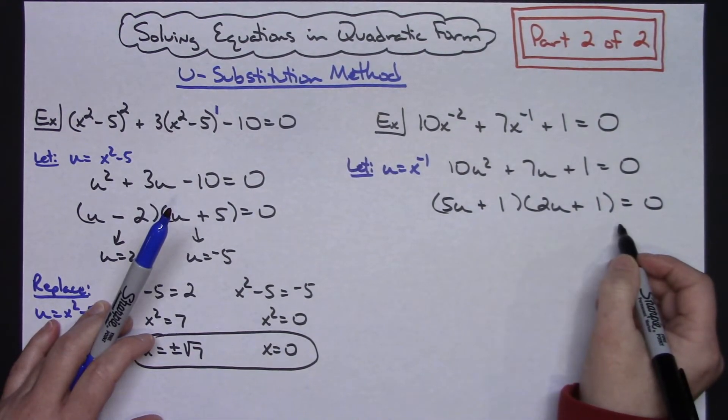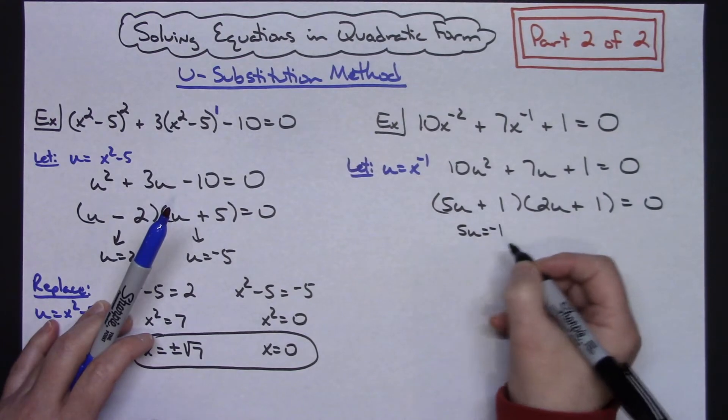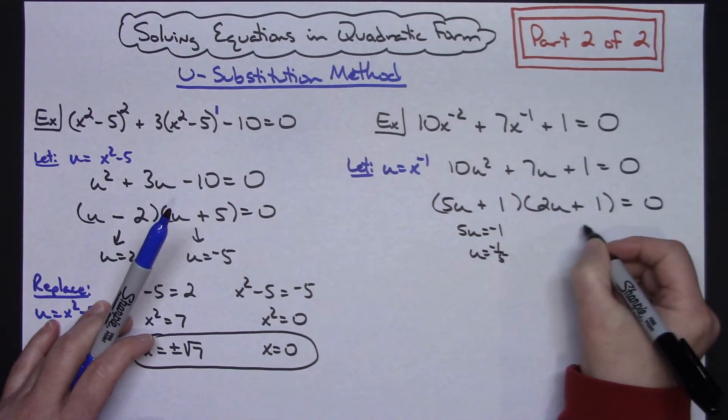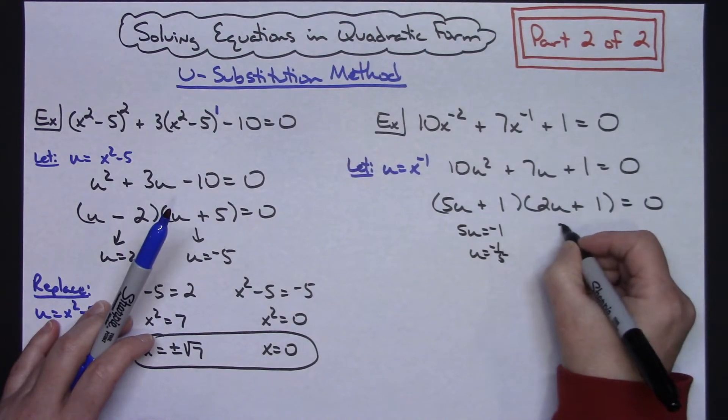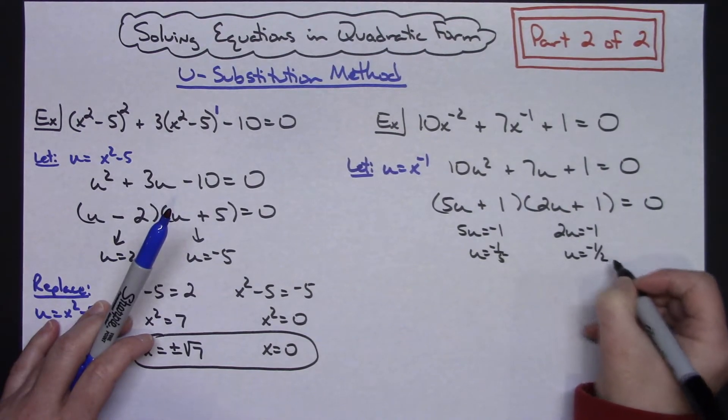Setting both of these equal to 0. Subtract 1 from both sides. I get 5u equals negative 1, so u equals negative 1 fifth. Doing the same thing to this one. Subtract 1 from both sides. 2u equals negative 1, so u equals negative 1 half.